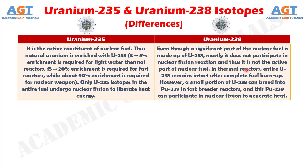In thermal reactors, the entire Uranium-238 remains intact after complete fuel burn-up. However, a small portion of Uranium-238 can breed into Plutonium-239 in fast breeder reactors, and this Plutonium-239 can participate in nuclear fission to generate heat.